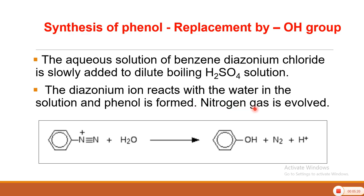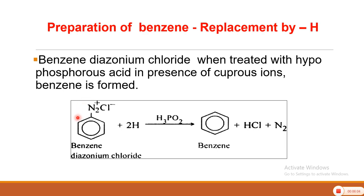The diazonium ions react with water molecules in the solution and phenol is formed. It is an acid-catalysed reaction and nitrogen gas is evolved. In all these replacement reactions, nitrogen gas is eliminated. To get phenol, benzene Diazonium Chloride solution is boiled with dilute H₂SO₄. We can also replace the N₂Cl group by H — in this case the compound is converted to benzene, which is preparation of benzene or replacement by H.